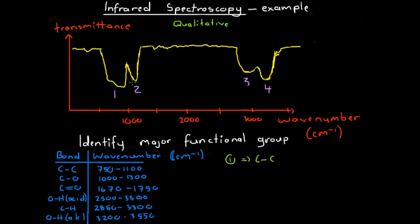Trough number two has a wave number of just over 1000, about 1100. Because it is quite distinct from trough number one, we can tell it has been caused by a different bond. So trough number two has not been caused by a C-C bond. Looking at the data, the wave number of trough two fits well into the range for a carbon-oxygen bond, so trough number two is caused by a carbon-oxygen bond.